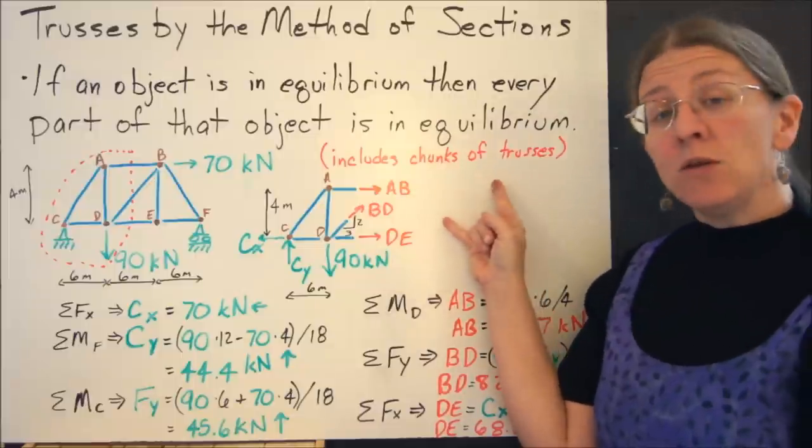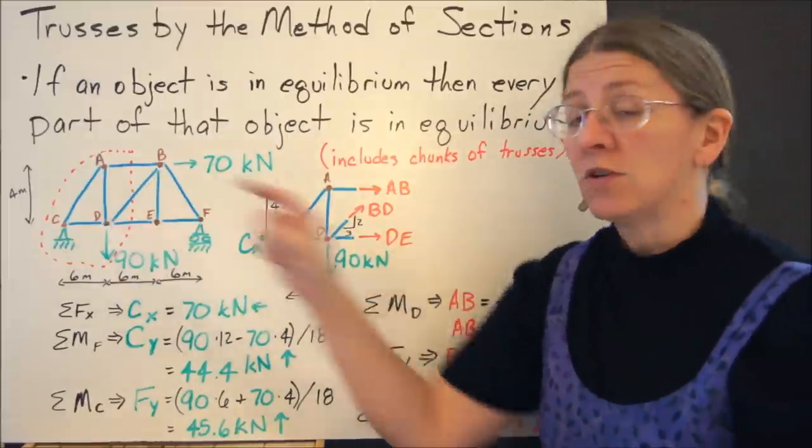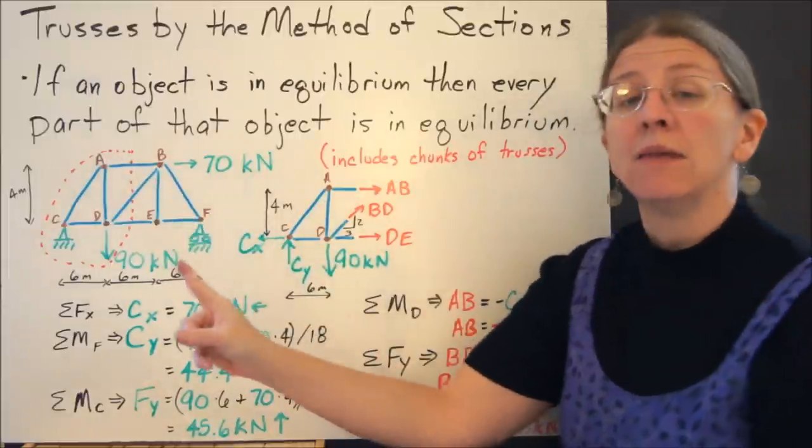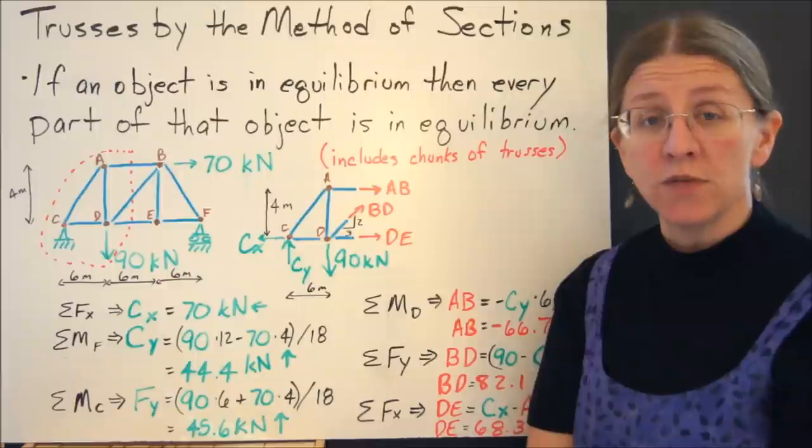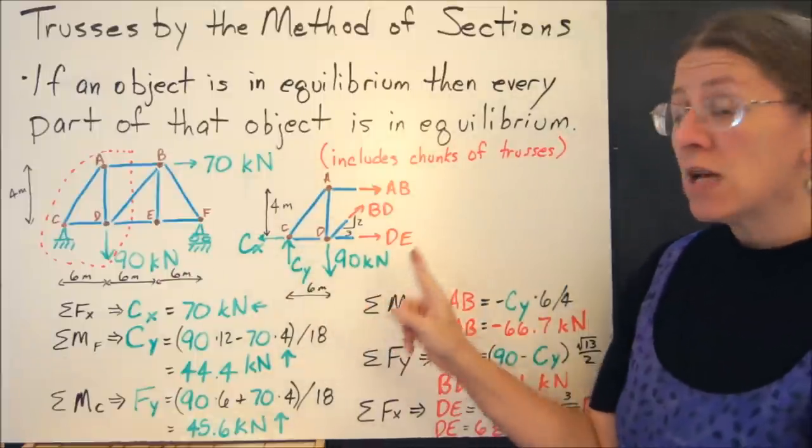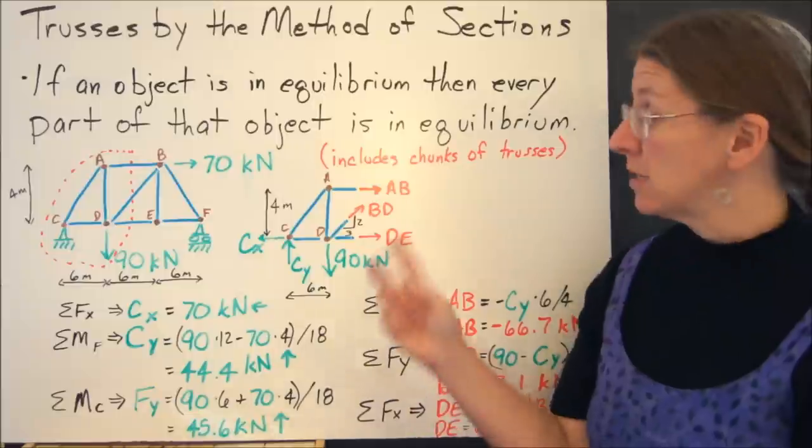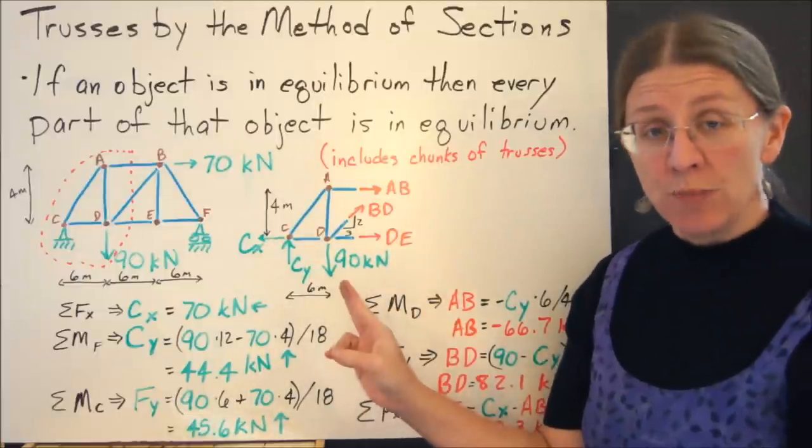These are the same as what you would get if you looked at the truss joint at C, and then the truss joint at A, and then the truss joint at D. Each of the joints gives you two equations of equilibrium. Each of the truss sections gives you three, because the truss section is a rigid body.